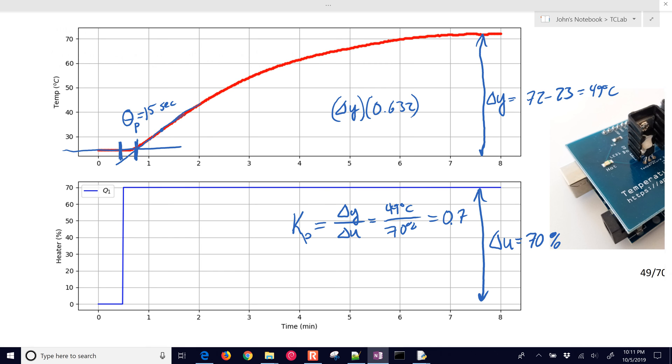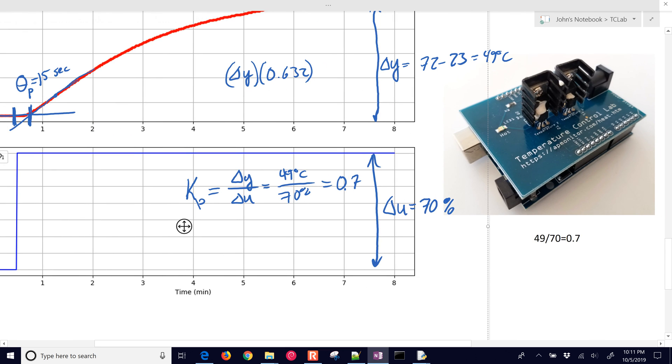So let's just see what that is. I'm going to try this again. And we'll do 49 times 0.632 equals, and that's going to be 31. So we need a change of 31. We started at 23 plus 31. We need to see when it gets to 54 degrees Celsius.